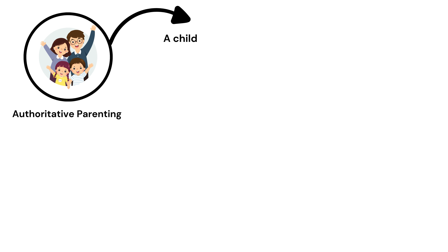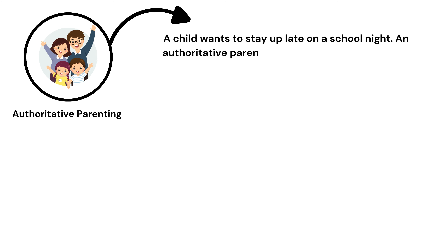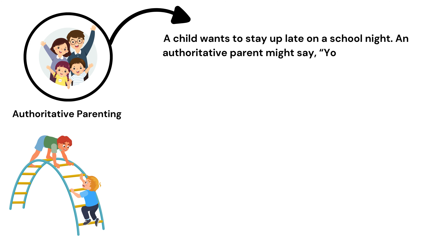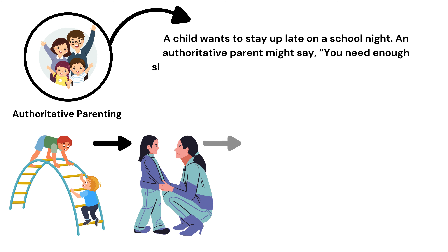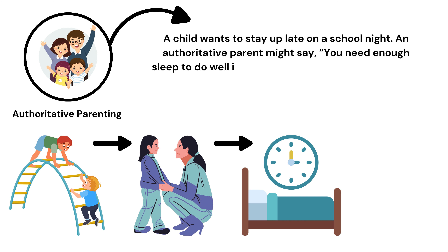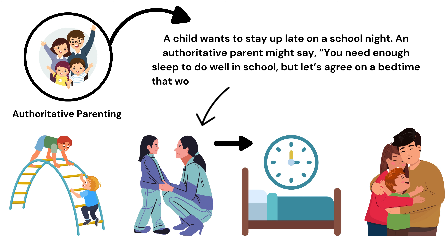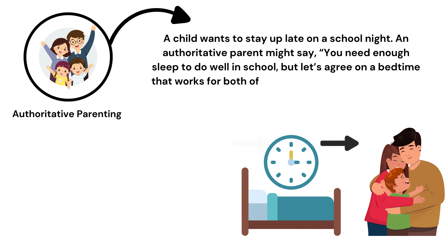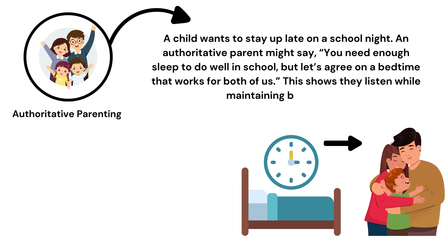Example: A child wants to stay up late on a school night. An authoritative parent might say, 'You need enough sleep to do well in school, but let's agree on a bedtime that works for both of us.' This shows they listen while maintaining boundaries.